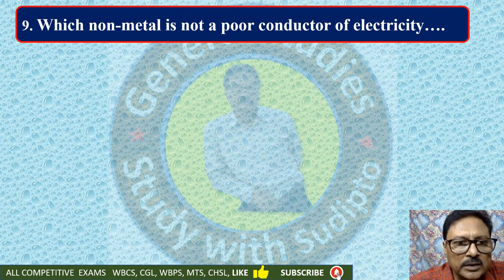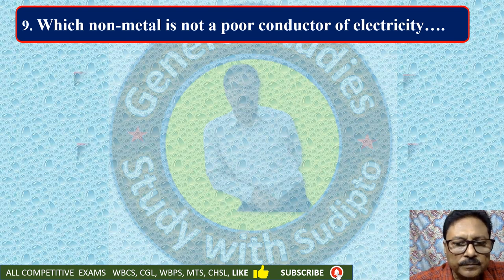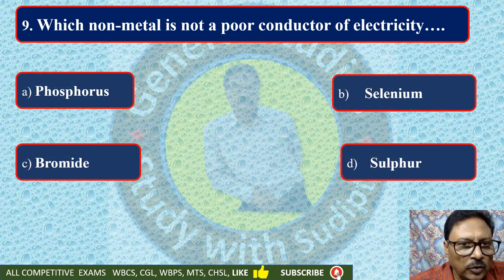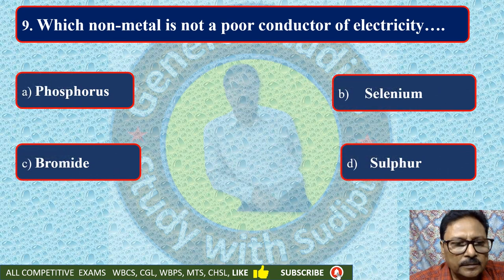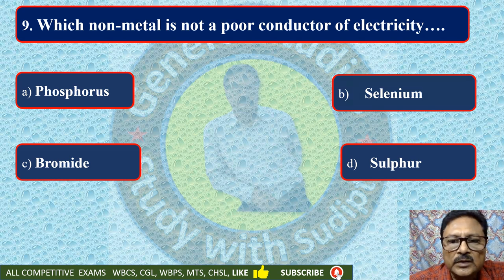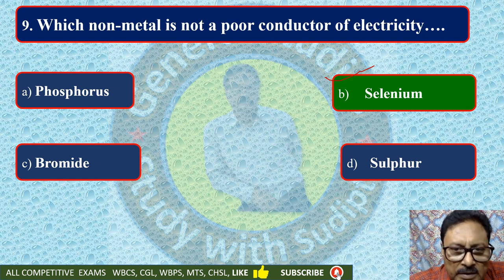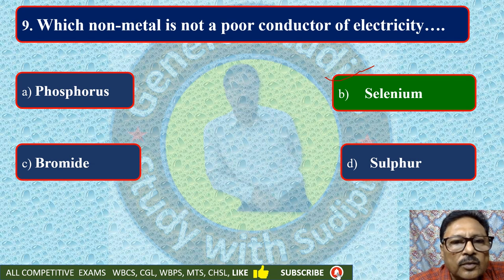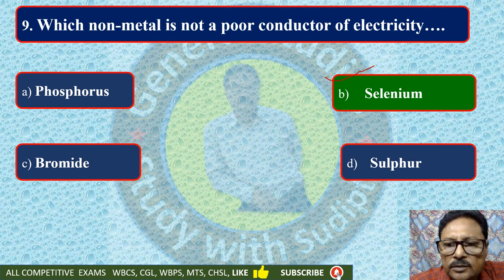Which non-metal is not a poor conductor of electricity? The options are phosphorus, selenium, bromide, or sulphur. The correct answer is selenium. Selenium is a non-metal but not a poor conductor — it is a good conductor.